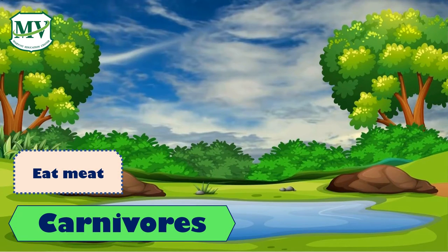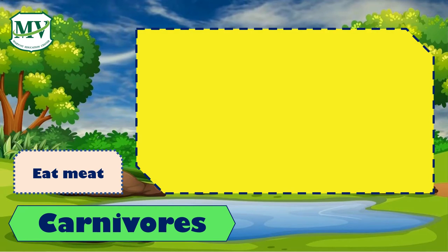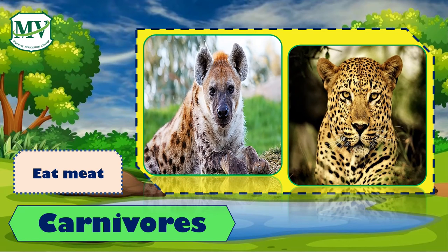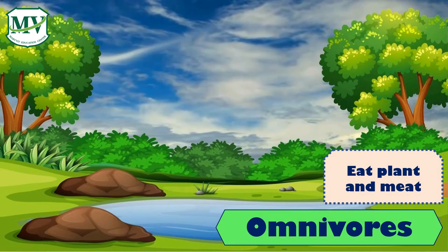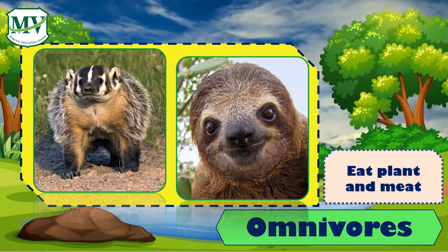Carnivores are animals that get energy from eating meat, like hyena and leopard. And the omnivores — omnivores are animals that get energy by eating both plants and meat, like badger and sloth.